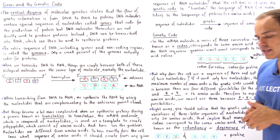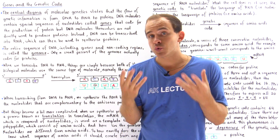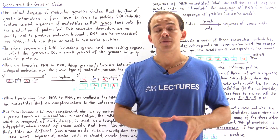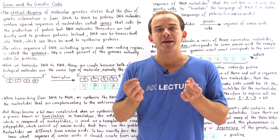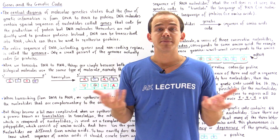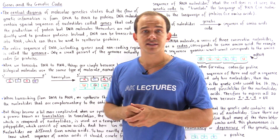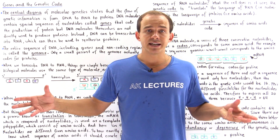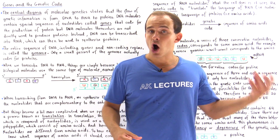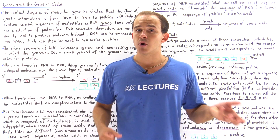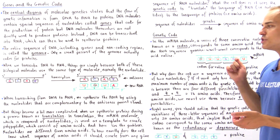Let's recall what the process of transcription is. The process of transcription is relatively simple because both RNA and DNA molecules are polymers of the same exact unit, known as the nucleotide. The only difference is that in DNA the sugar is deoxyribose, while in RNA the sugar is ribose, and in RNA the thymine bases are replaced with uracil.